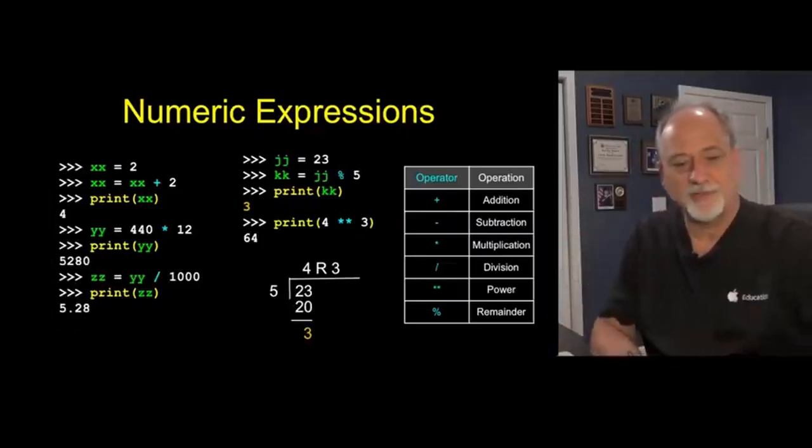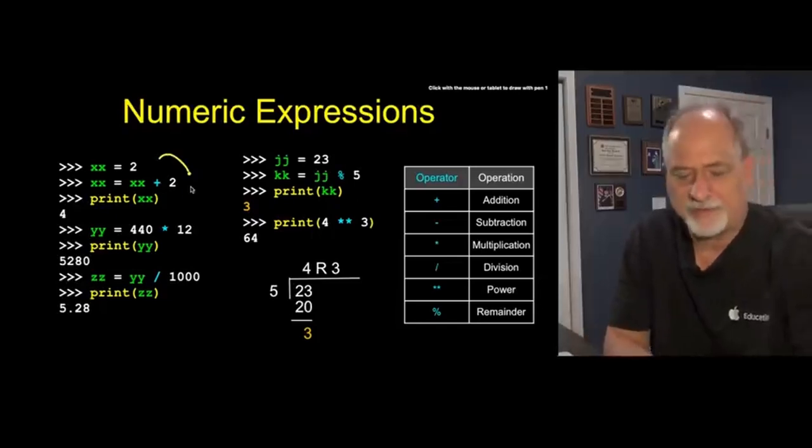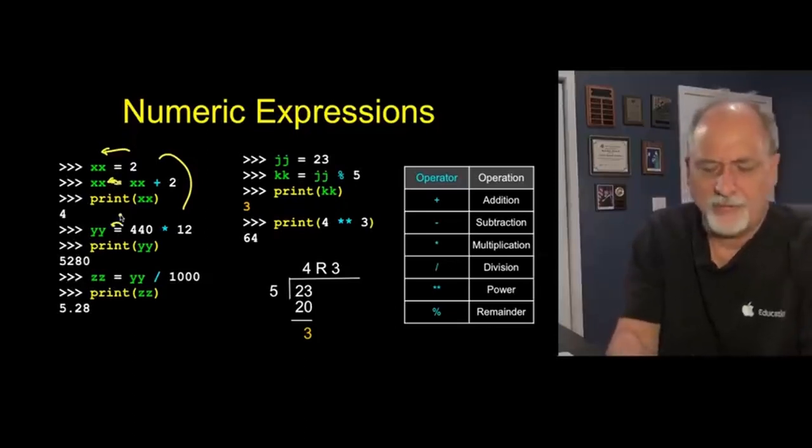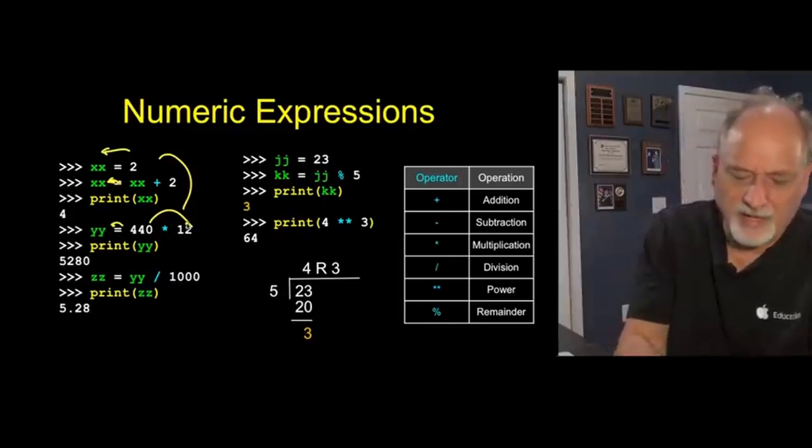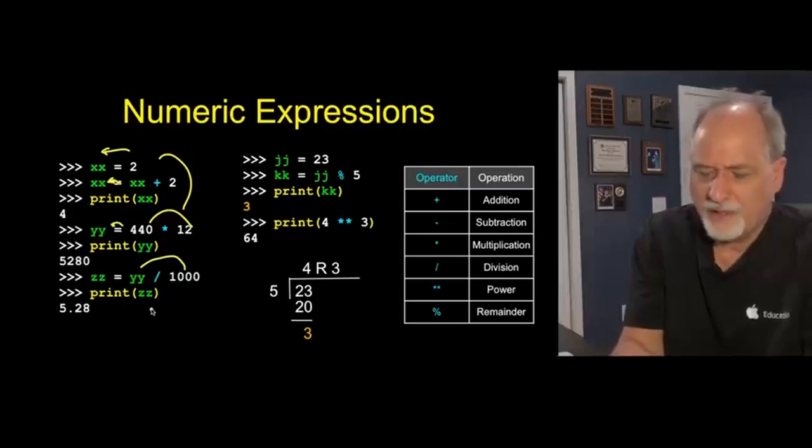Here's a whole series of little examples of this. We've already seen the plus, x equals x plus one. Keep remembering that these assignments are arrows, basically. They have a direction. Multiplication, 440 times 12. Dividing over 1,000. And here we're gonna put 23 into jj, and then we're gonna do modulo.